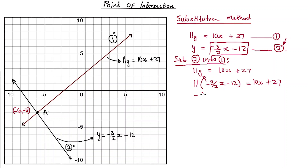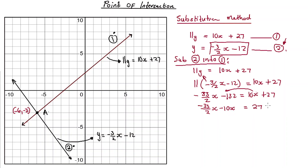Expanding: 11 times negative 3 over 2 gives us negative 33 over 2 x, and 11 multiplied by negative 12 gives us negative 132, equal to 10x + 27. Transposing the x terms: negative 33 over 2 minus 10x, and transposing negative 132 it becomes positive 132 on the right side. So we have negative 53 over 2 x equals 27 plus 132, which gives us 159. Now I need to solve for x.